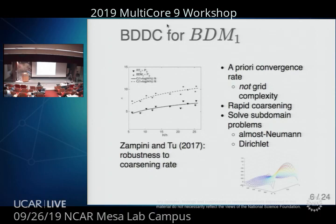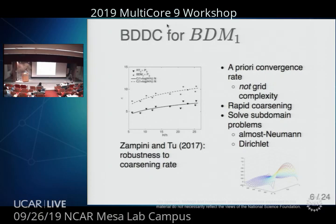This rapid coarsening is a really cool feature, unique to BDDC and related methods, not directly available in other classes of methods. The ingredients to solve these problems is to be able to solve subdomain problems with an almost-Neumann system — like Neumann boundary conditions except for a few degrees of freedom or perhaps an integral constraint. The corners and averages are stapled down to zero, and you solve problems of that variant. It brings you to a coarse space where you might use something like algebraic multigrid, or you can continue to recursively apply these methods.